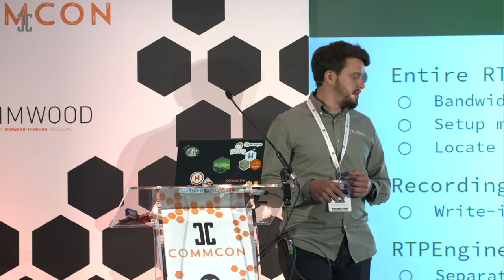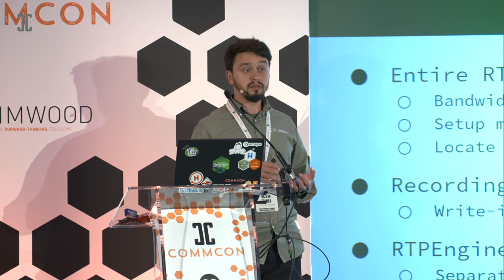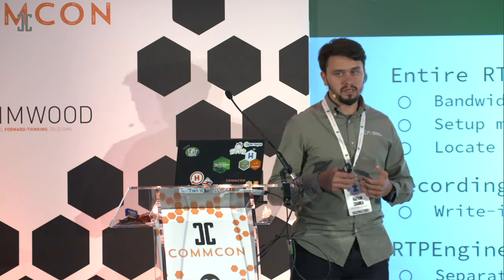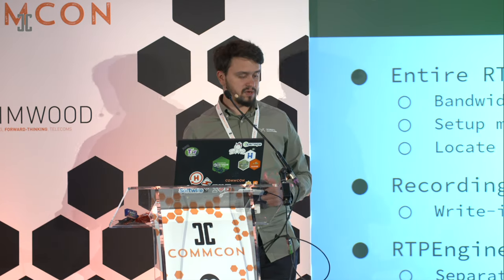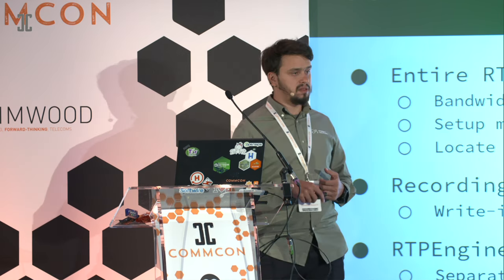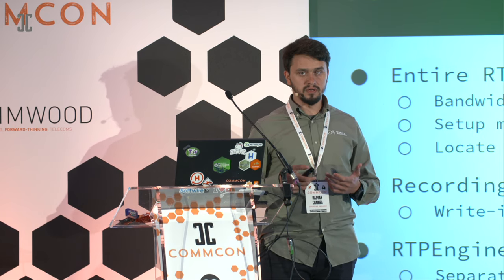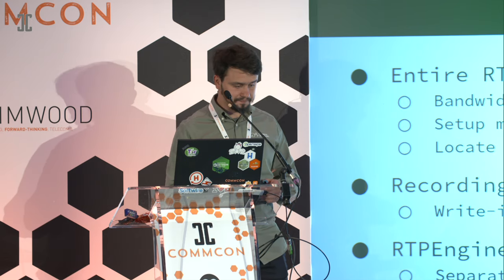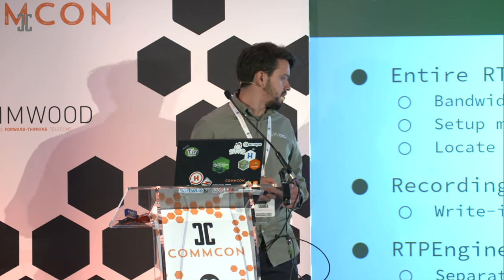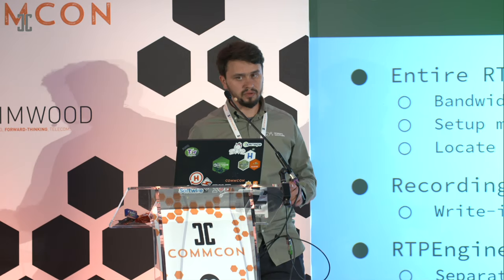A very nice feature that RTP engine has is kernel-space forwarding support and recording. Having them in kernel, you avoid a lot of context switches, so the relaying and recording is way faster. To do that, you have to install a separate recording daemon which comes with the package. It's also open source, so you don't have to worry about that.